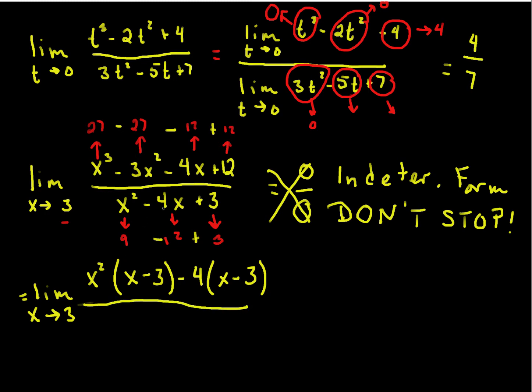The bottom factors into, it's a 3 and 1, it's got to end up to 4. So, the bottom will be x minus 3 times x minus 1.